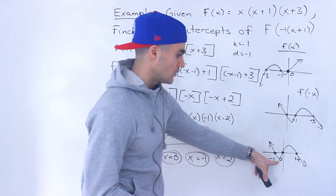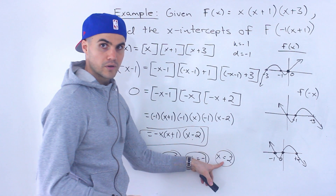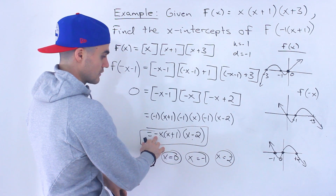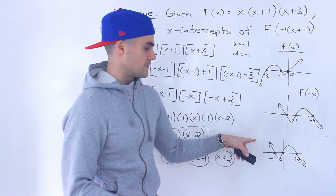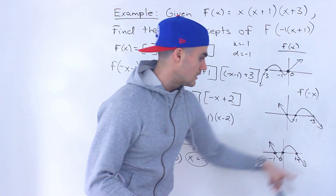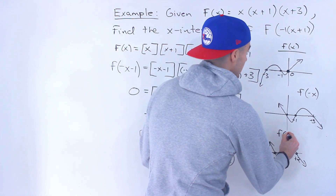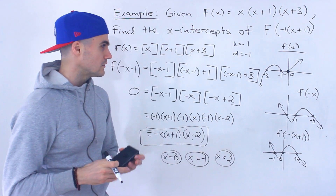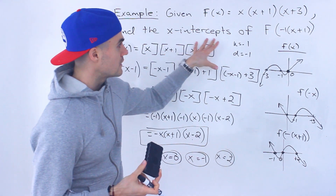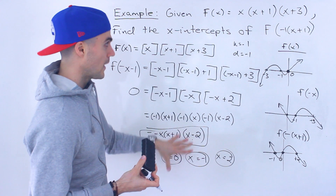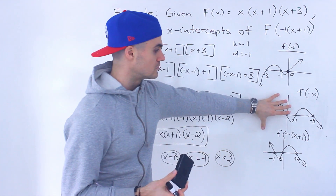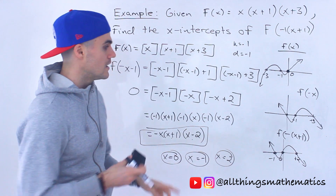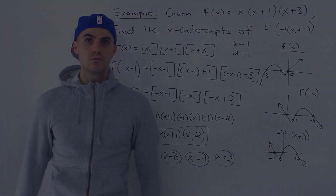Notice those x-intercepts — negative 1, 0, and positive 2 — are exactly what we got with the algebraic method. This graph has a negative leading coefficient, starting in the second quadrant. So that's f of negative bracket x plus 1. Maybe a little less intuitive, but it works. My mind first went to the algebraic way, but both approaches give the same three x-intercepts.